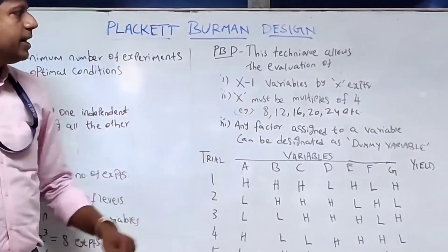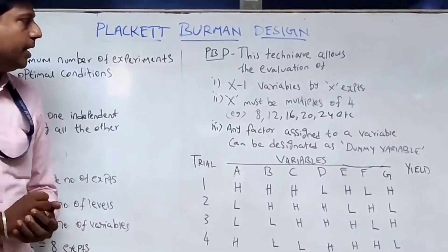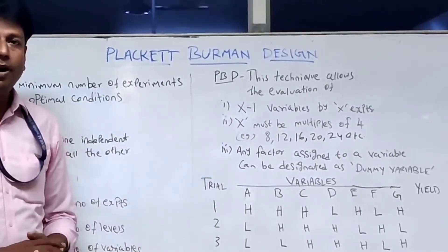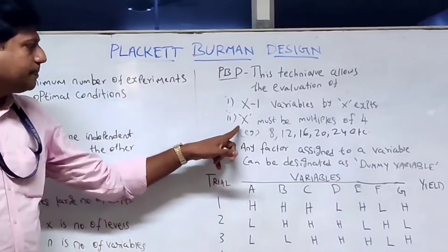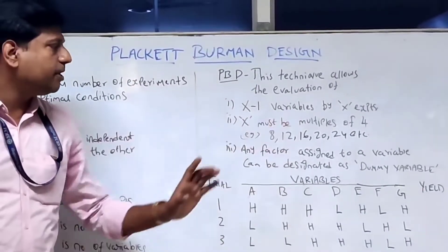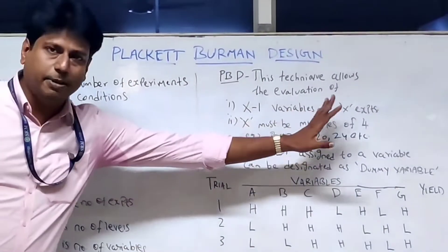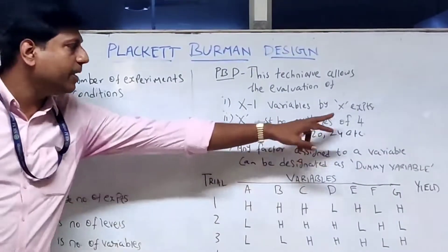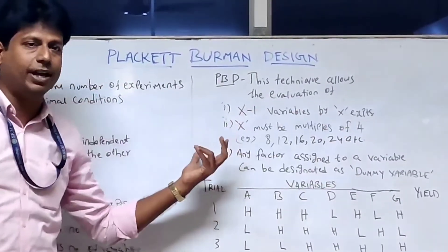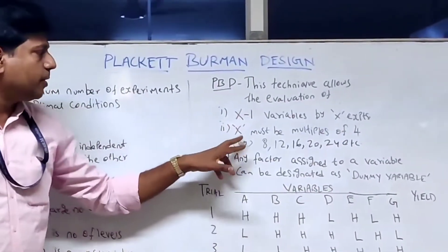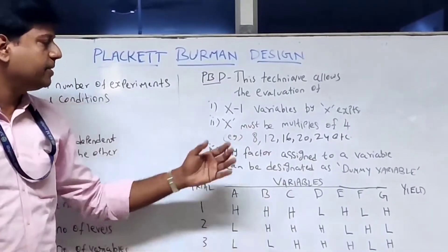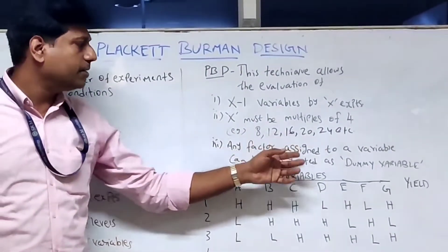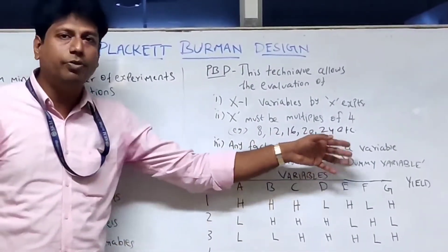So we opt for the Plackett-Burman design. This technique allows evaluation based on certain rules: x minus 1 variables for x experiments, and x must be multiples of 4 — that is, 8, 12, 16, 20, 24, and so on.